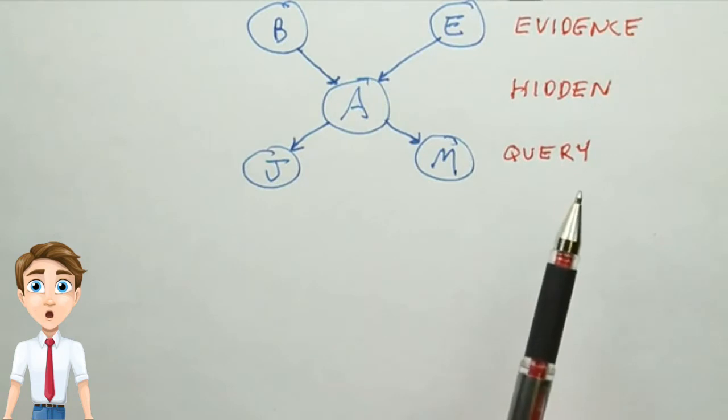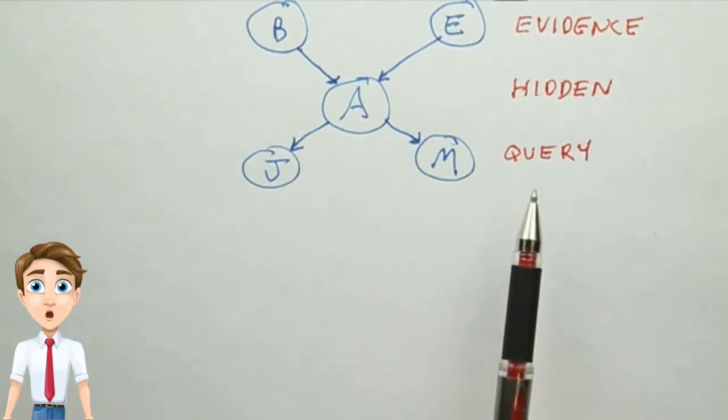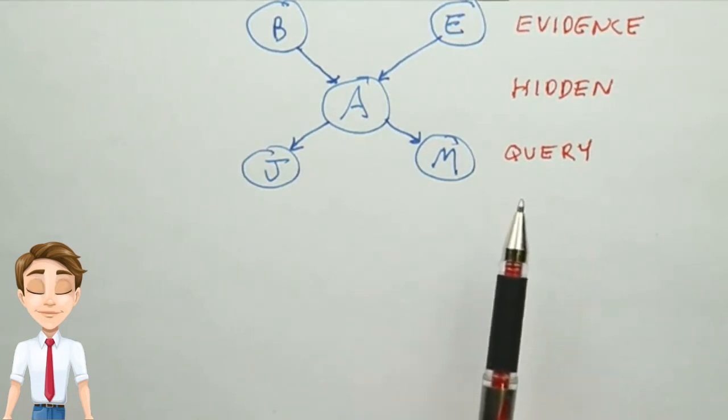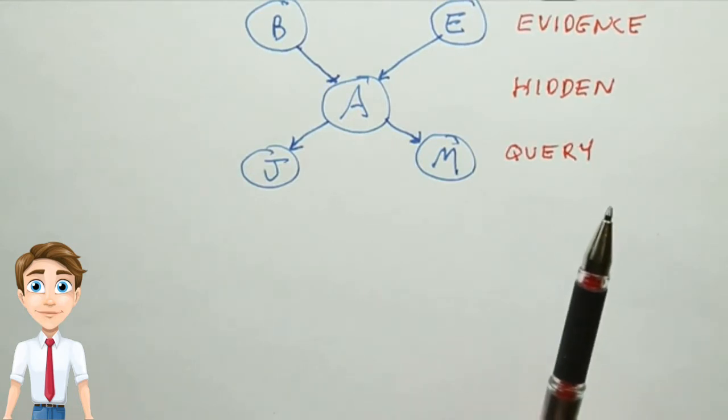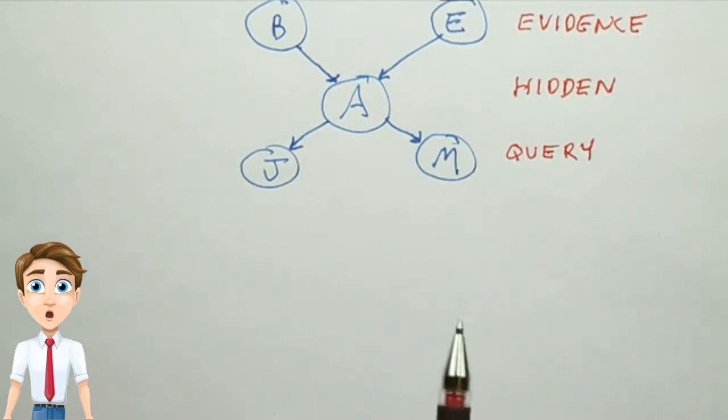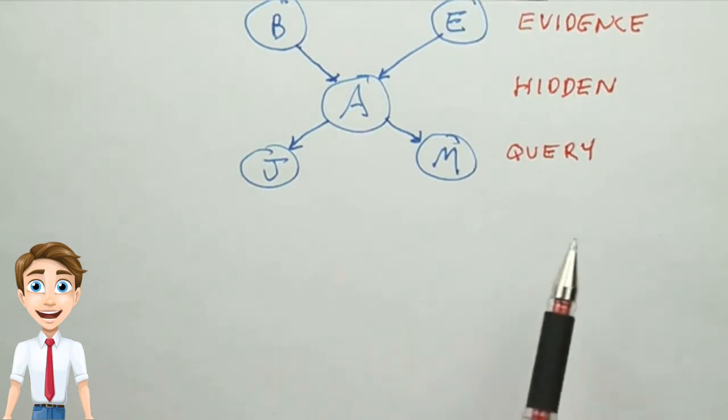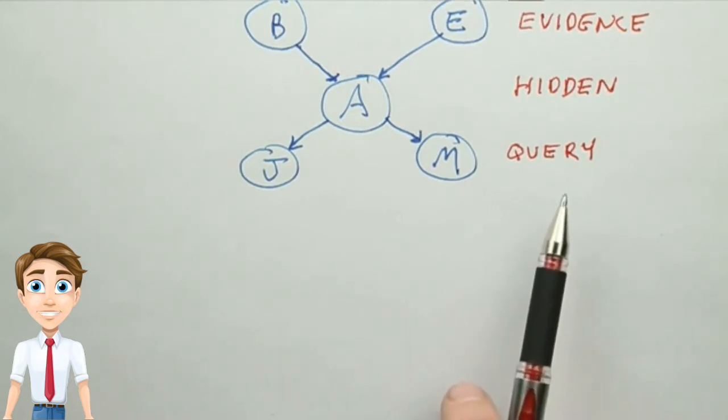And now, furthermore, in probabilistic inference, the output is not a single number for each of the query variables, but rather it's a probability distribution. So the answer is going to be a complete joint probability distribution over the query variables.